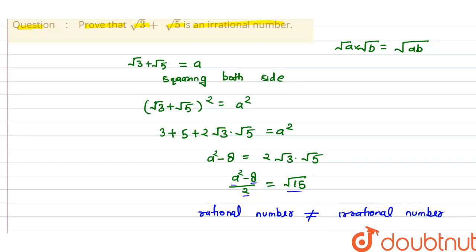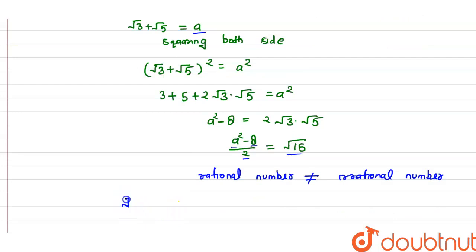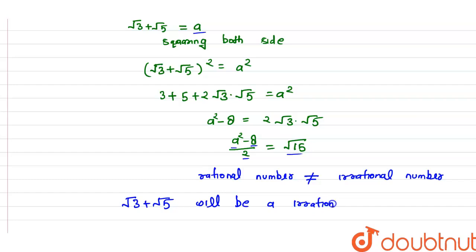So our assumption leads to a contradiction. Therefore, √3 + √5 is not a rational number — it is an irrational number.